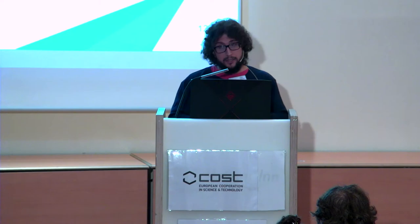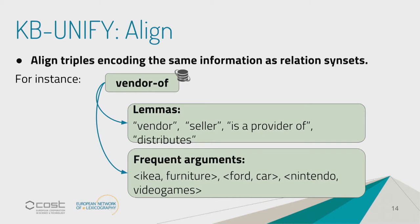This is useful because you can also taxonomize the relation synsets. You can say that 'vendor of' is a hyponym of 'supplier of' in a way — it's useful for having a taxonomy of relations. And within a single relation synset, you can have lemmas — linguistic realizations, or lexicalizations in BabelNet terminology. So 'vendor,' 'seller,' 'is a provider of,' 'distributes' — these are likely verbal predicates to occur with similar left and right arguments. Looking at the frequency of these triples, you can clearly see that IKEA, Ford, and Nintendo are providers of something — furniture, cars, or video games, respectively.